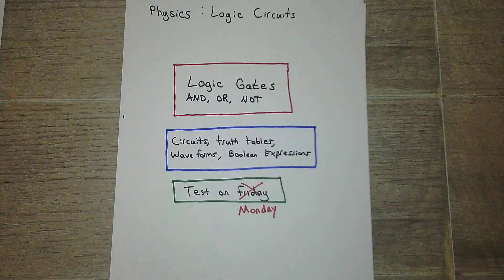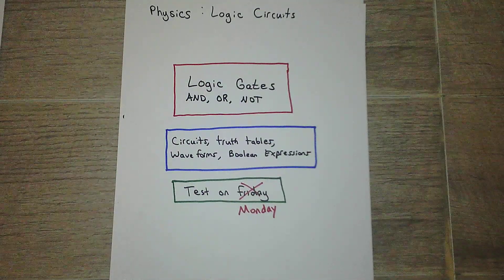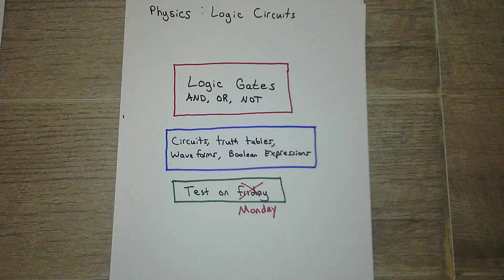So far we've looked at circuits, we've looked at truth tables, waveforms, and boolean expressions for the and, or, not gates individually. So now we're going to look at some combination circuits.